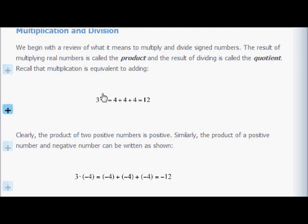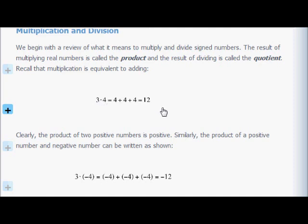This illustrates that multiplying is equivalent to adding. If you think about having 3 bags of apples, each bag has 4 apples in it. To find the total number of apples, you multiply 3 bags times 4 apples per bag equals 12 apples. Or you could count: 4 plus 4 plus 4 gives a total of 12.